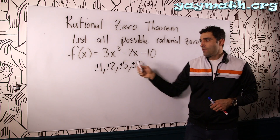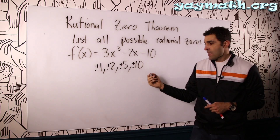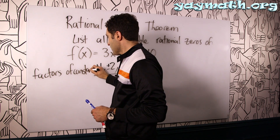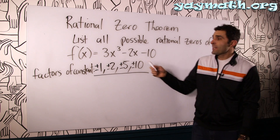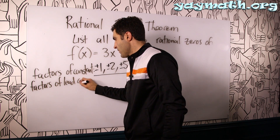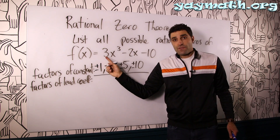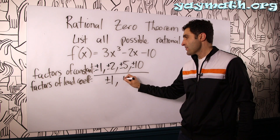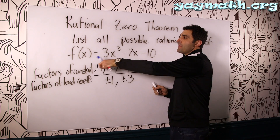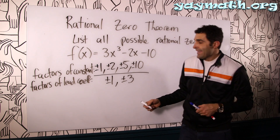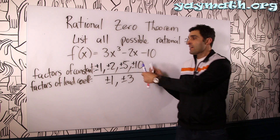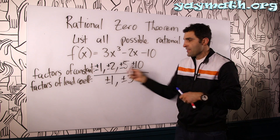So these eight numbers — one, negative one, two, negative two, and so forth — are all factors of negative ten. Then we establish the factors of the constant over here, and then we're going to get the factors of the leading coefficient. The factors of the leading coefficient here are factors of three: plus or minus one and plus or minus three. And the list of all possible rational solutions is all these numbers divided by one and then all these numbers divided by three — every combination you can.